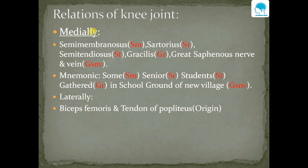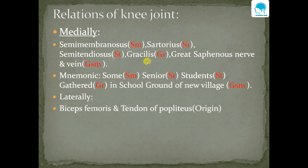Now medial relations — these are semimembranosus, sartorius, semitendinosus, gracilis, great saphenous nerve and vein. We can remember these using the mnemonic 'Some Senior Students Gathered In School Ground Of New Village.' SM of Some stands for semimembranosus, SR of Senior for sartorius, ST of Students for semitendinosus, GR of Gathered for gracilis, and GS and V of School Ground of New Village stands for great saphenous nerve and vein.